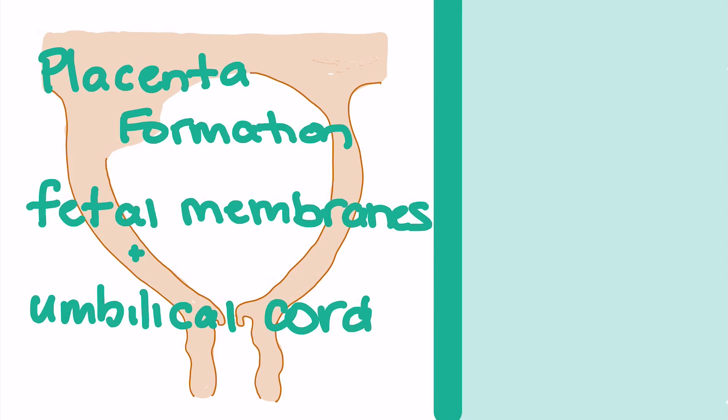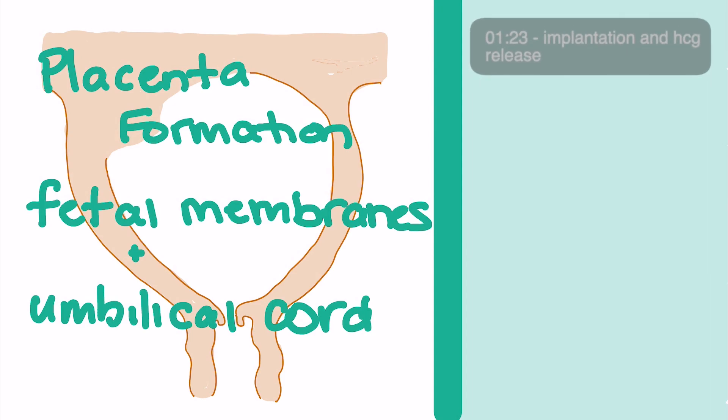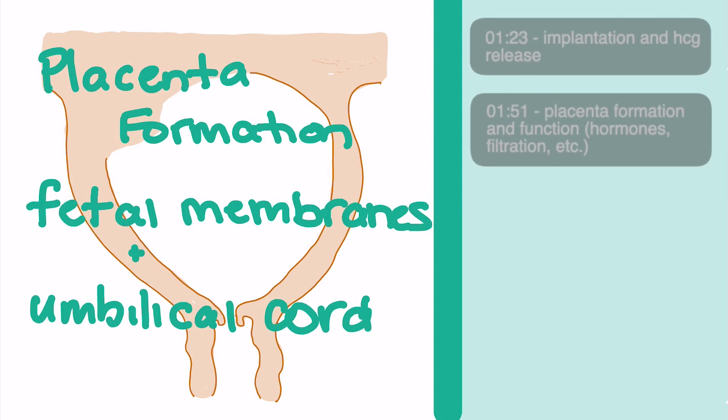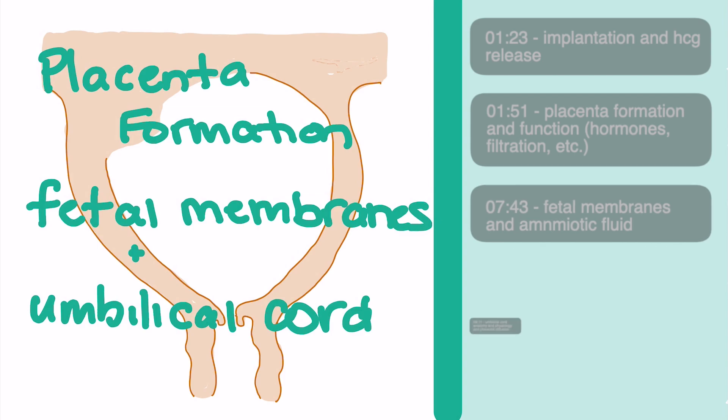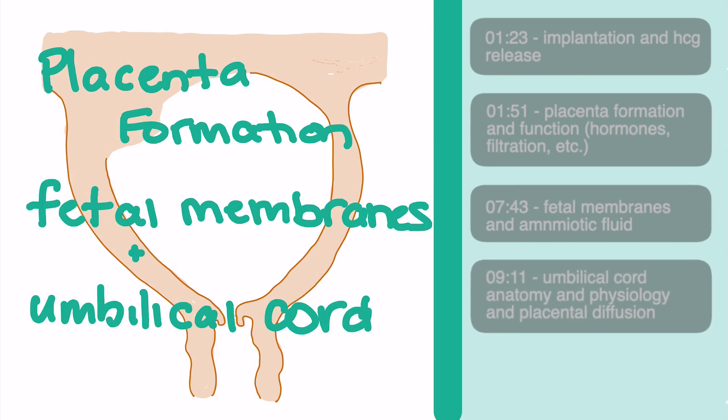Welcome back. In this video, we're going to talk about the formation of the placenta, the fetal membranes, and the umbilical cord, and the function each of these play in pregnancy and fetal development. Specifically, we're going to look at implantation and HCG release, placental formation and function, the fetal membranes, and the umbilical cord and its anatomy and physiology. Timestamps are available for each of these in the description.